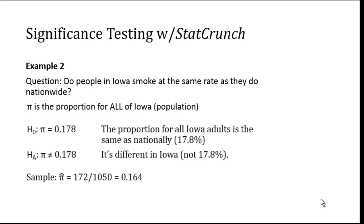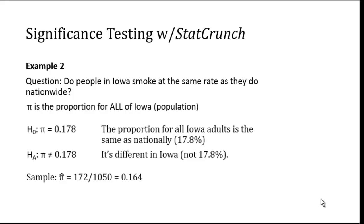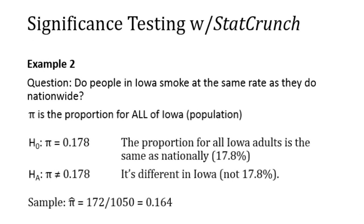Remember the question that we asked in example 2 was: do people in Iowa smoke at the same rate as they do nationwide? Pi stands for the proportion for all of Iowa — that is, for the entire population of Iowa adults. The null hypothesis is that pi is 0.178, which is the same as saying the proportion for Iowa adults is the same as it is nationally. And the alternative hypothesis is that the proportion in Iowa is different.